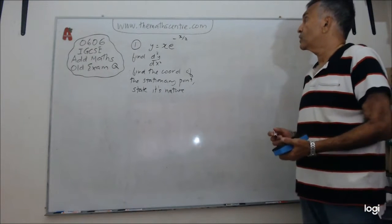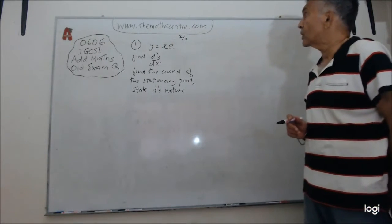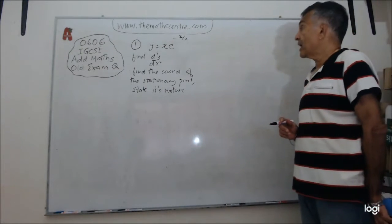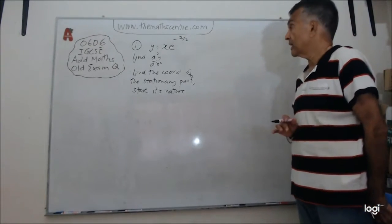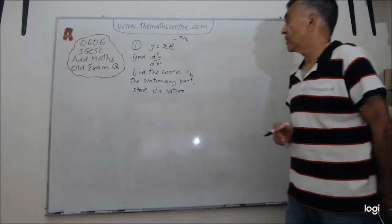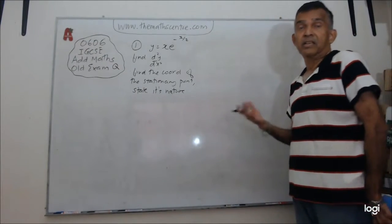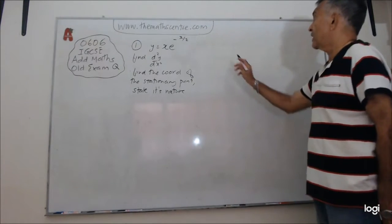The question is y equals x e to the power of minus half x. And you're asked to find d²y/dx². That's the first bit. And then they tell you to find the coordinates of the stationary point and state its nature. State its nature means whether it's a maximum point or a minimum point. So let's start.